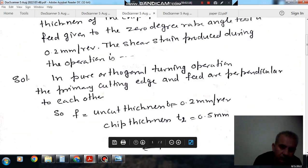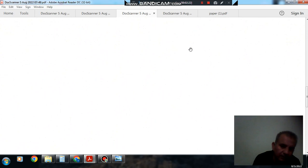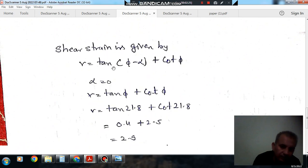Now we have to find out shear strain produced, and shear strain produced is given by gamma. That is equal to tangent phi minus alpha plus cosecant phi. Phi is your shear plane angle, alpha is your rake angle. So putting value alpha as 0...